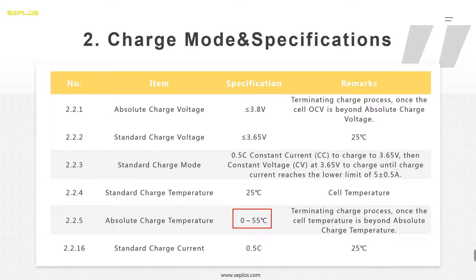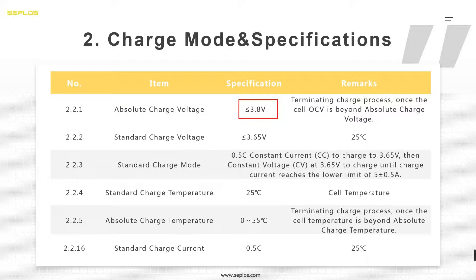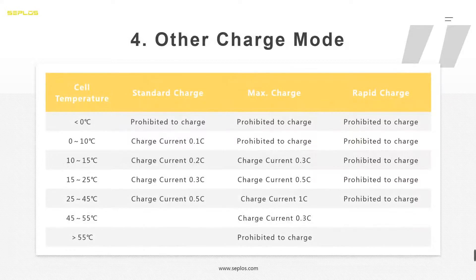If we charge the battery below 0°C, it not only affects the battery cycle life, it may also cause the battery to explode. For charge voltage, it should be less than 3.8V — that is why an NCM or NCA battery charger is not suitable for LFP batteries.